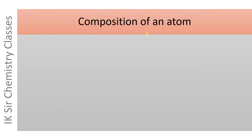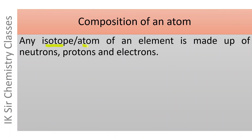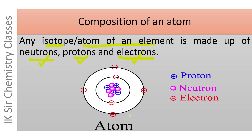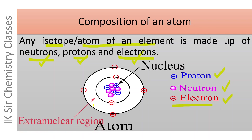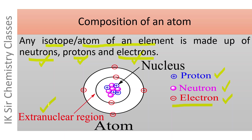Composition of an atom: any atom or isotope of an element is made up of three fundamental particles — neutrons, protons, and electrons. The proton carries a positive charge, the neutron is neutral, and the electron carries a negative charge. The proton and neutron are present at the nucleus, while the negatively charged electrons move around the nucleus in the extranuclear region.